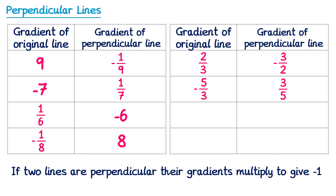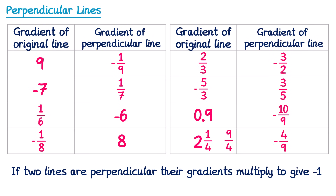If the gradient of the original line was given as a decimal, for example 0.9, we'd want to convert this to a fraction first. 0.9 is the same as 9 over 10, so the reciprocal — flipping it upside down — is 10 over 9, and it needs to be negative since the original one was positive, so negative 10 over 9. It could also be given as a mixed number, for example 2 and a quarter. Convert this to an improper fraction: 2 and a quarter is 9 over 4. Flipping it gives 4 over 9, and that's positive, so the perpendicular one will be negative — so negative 4 over 9.